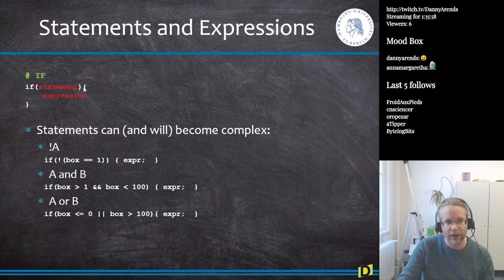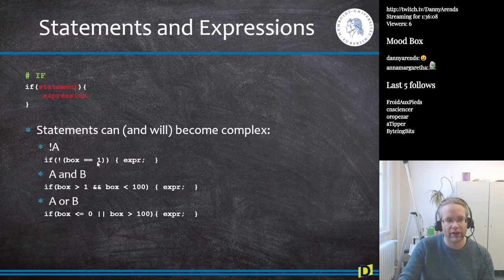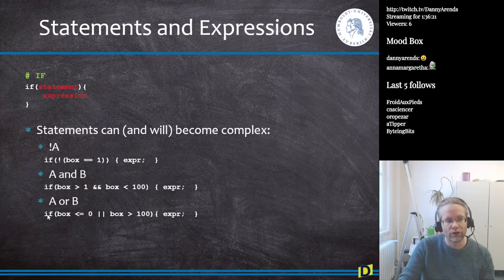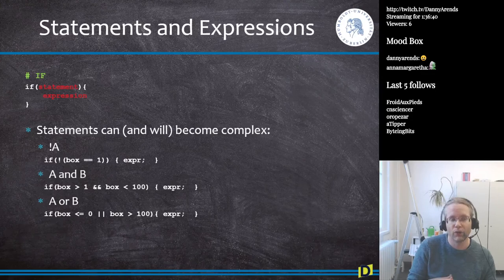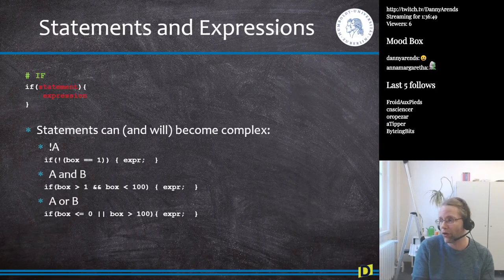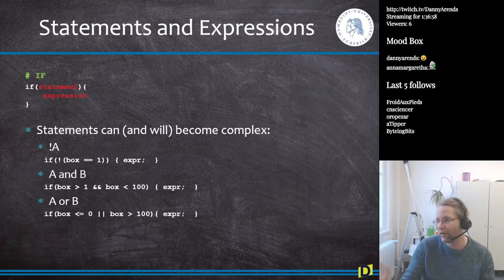Statements can become very complex. You can use `not` — for example, if the box does not equal 1. You can use `and` — if box > 1 and the value is less than 100. You can use `or` — if box <= 0 or box > 100. There are many options to specify these statements. For instance, you might want to take all individuals born before a certain date, or take only animals with a certain treatment, and use if statements to build those conditions.